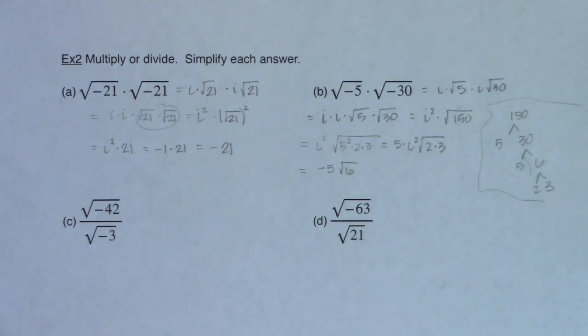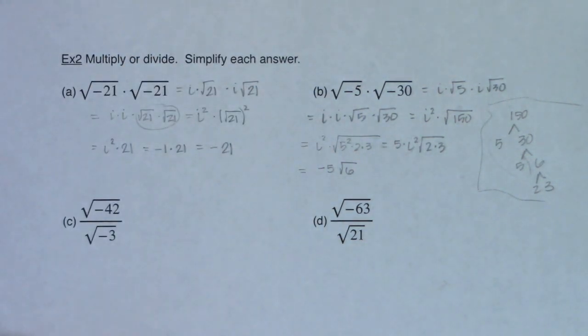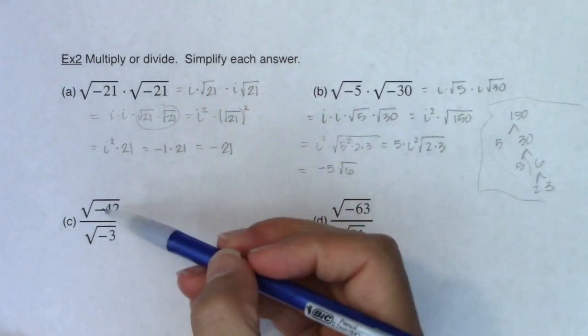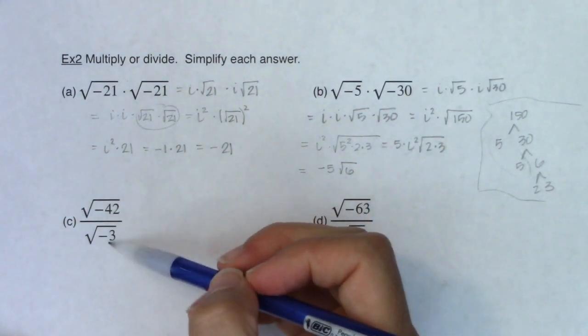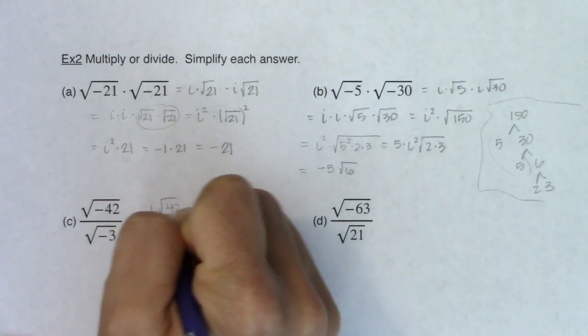Alright, let's take a look at parts C and D. So where we multiplied up here, we're going to divide for parts C and D. But it's the same situation. I need to get the i's out first. So this is going to become i times the square root of 42 in ratio to i times the square root of 3.